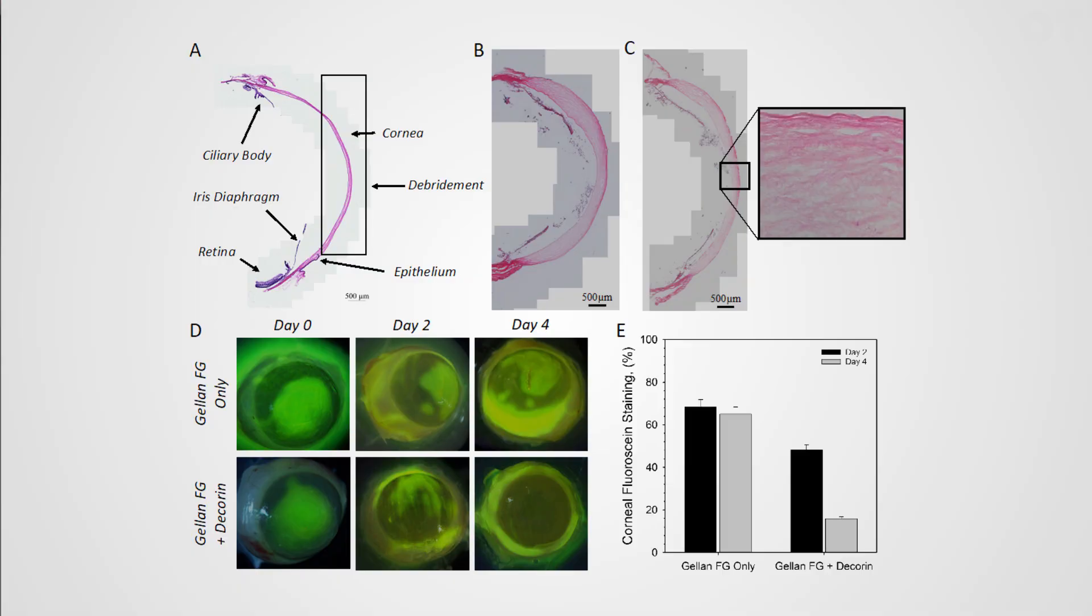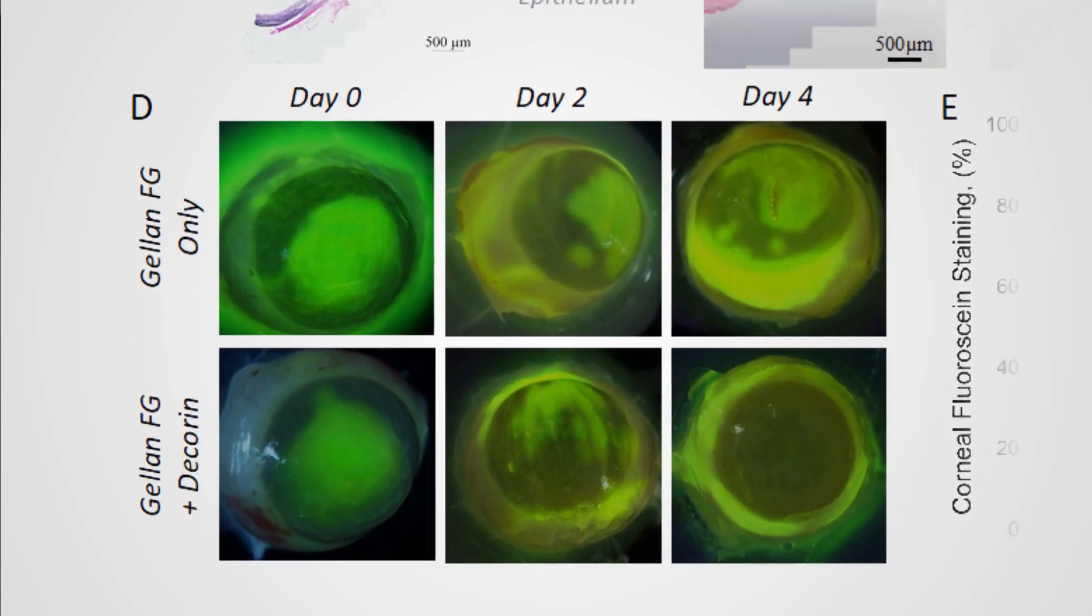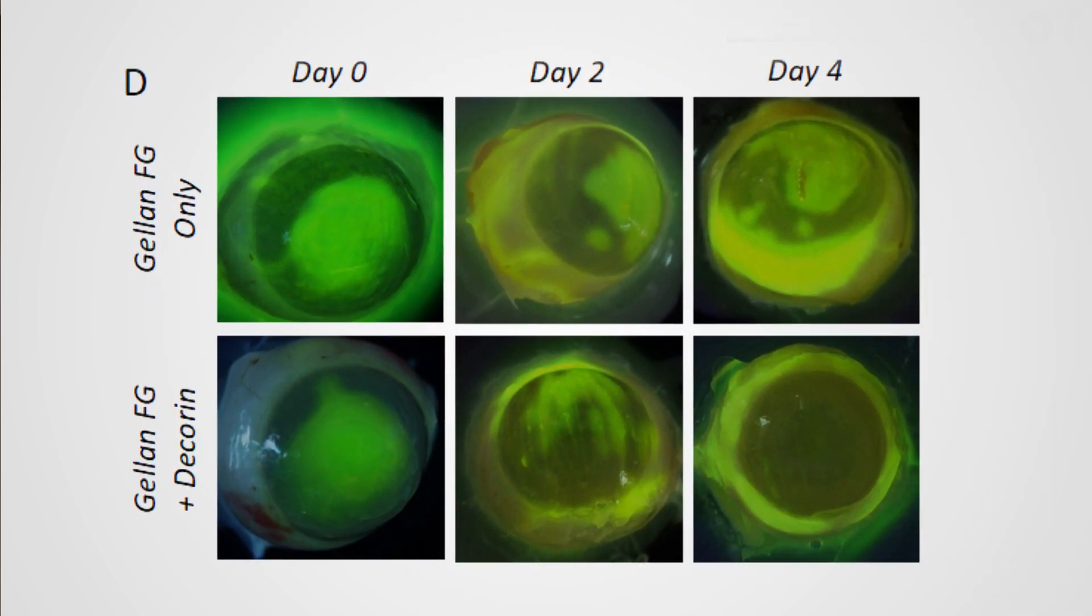We spent a period of time taking the Decorin molecule and formulating it into our eye drop, and then we tested it first in an ex vivo model of corneal damage. These are pig's eyes, and what you can see is with a Gellan fluid gel eye drop with the Decorin, we actually had restoration of that epithelial surface much quicker than when the eye drop material was used on its own.